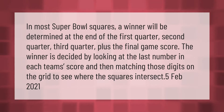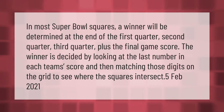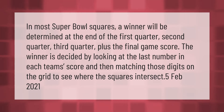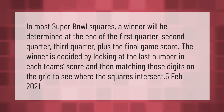In most Super Bowl Squares, a winner will be determined at the end of the first quarter, second quarter, third quarter, plus the final game score. The winner is decided by looking at the last number in each team's score and then matching those digits on the grid to see where the squares intersect.